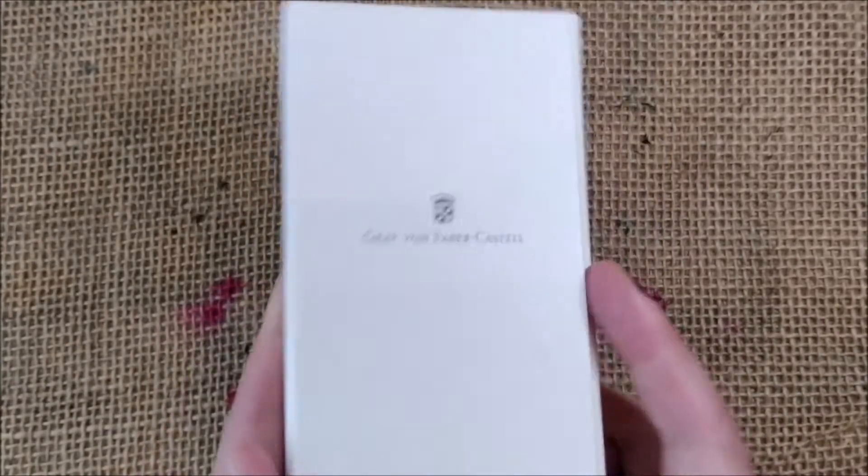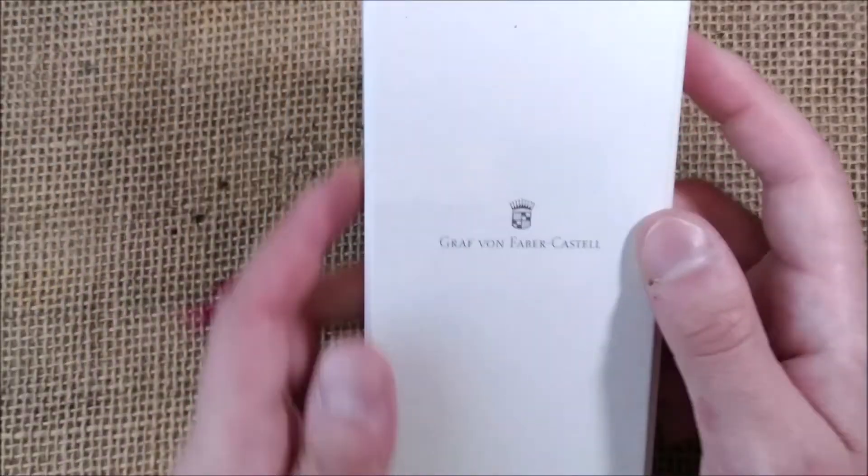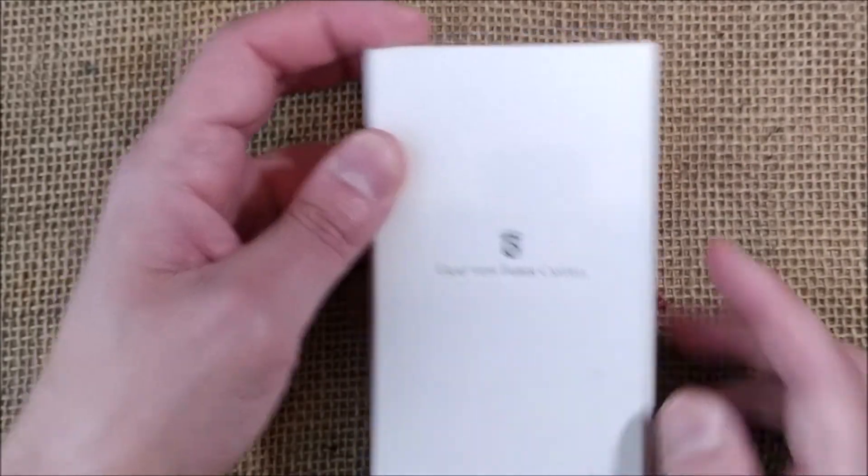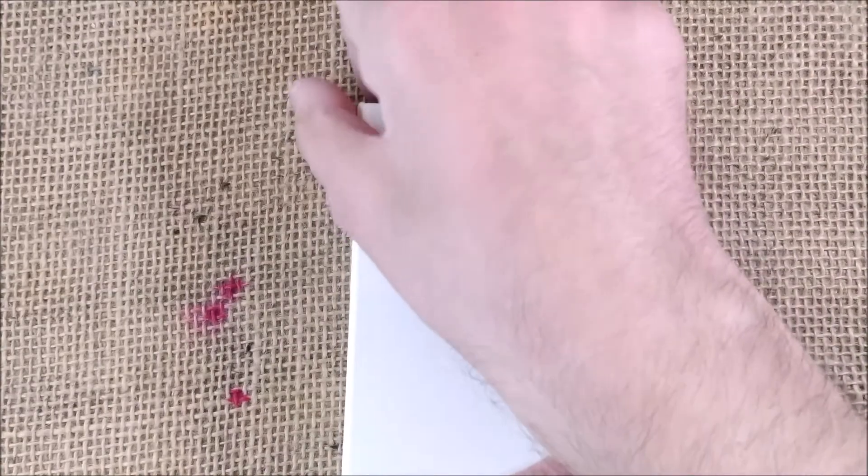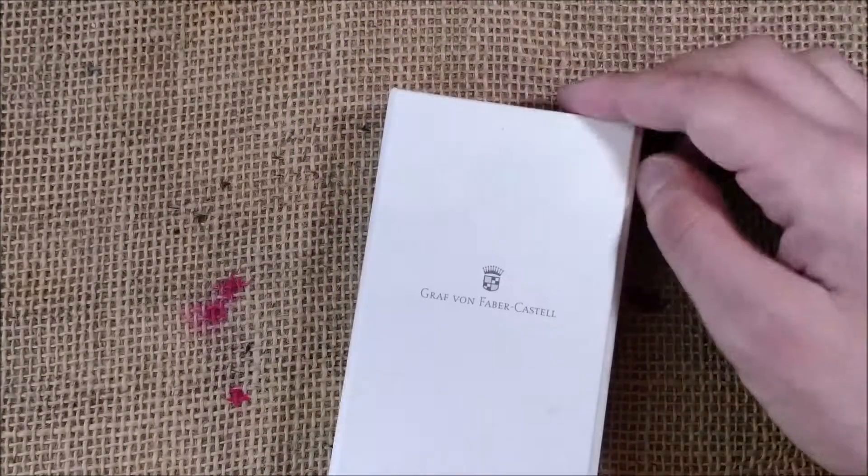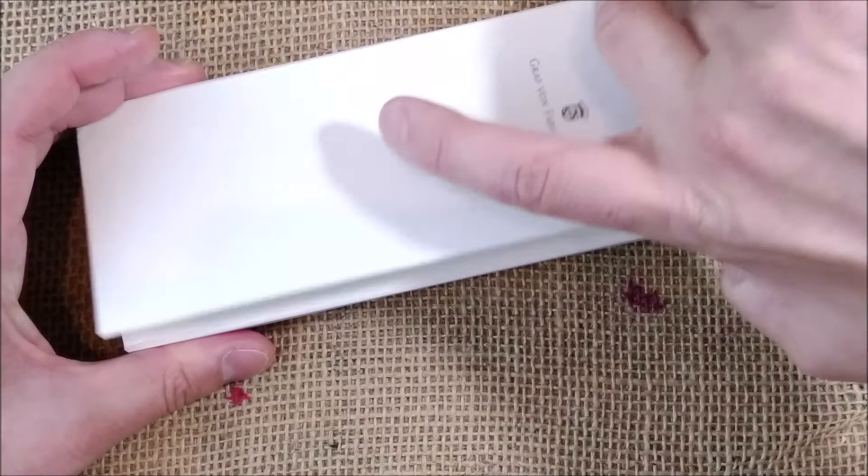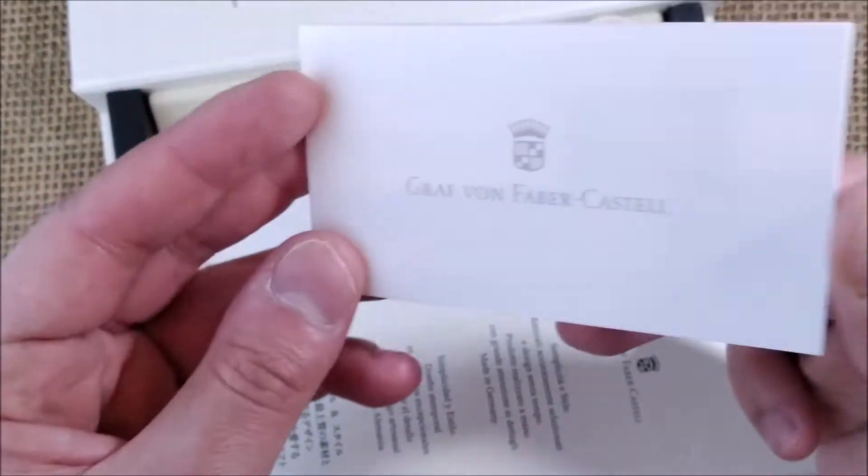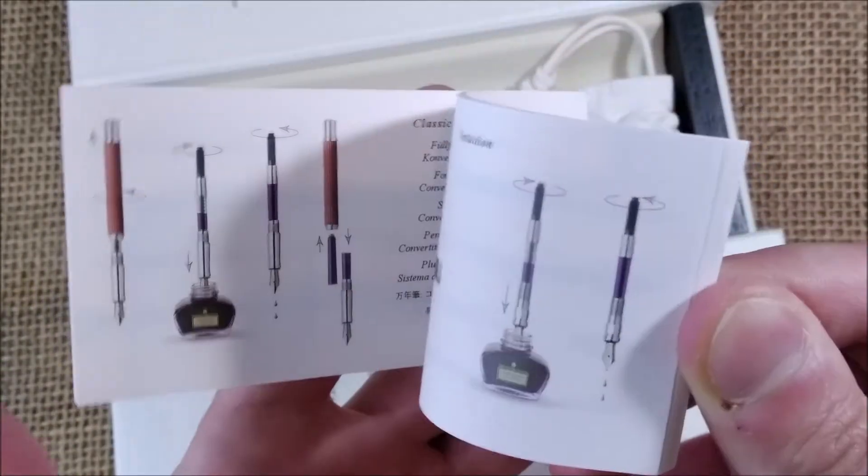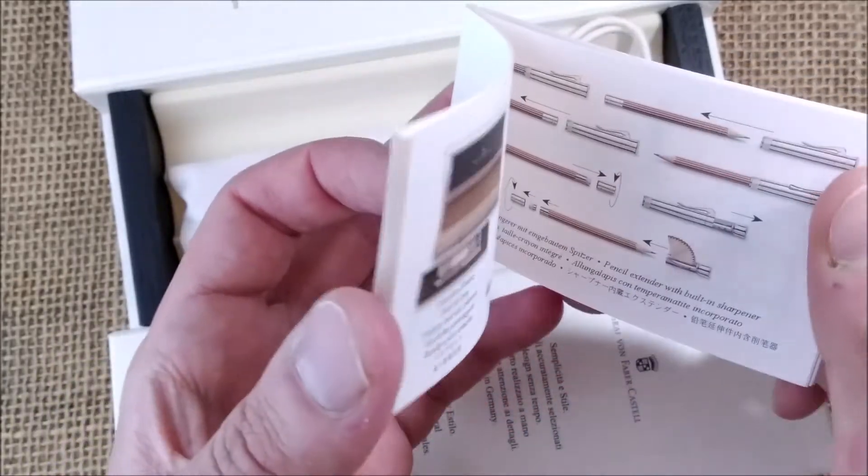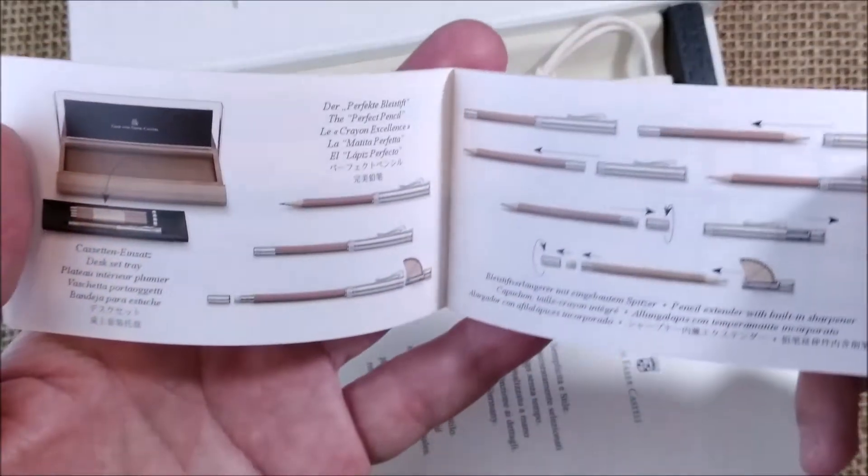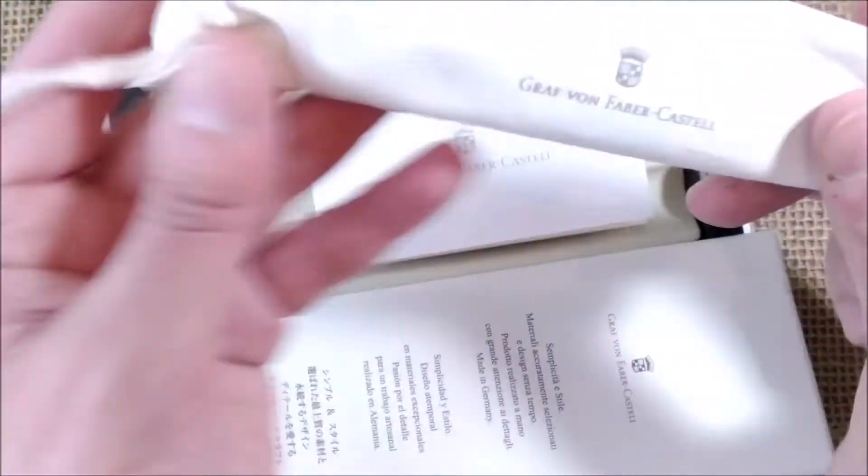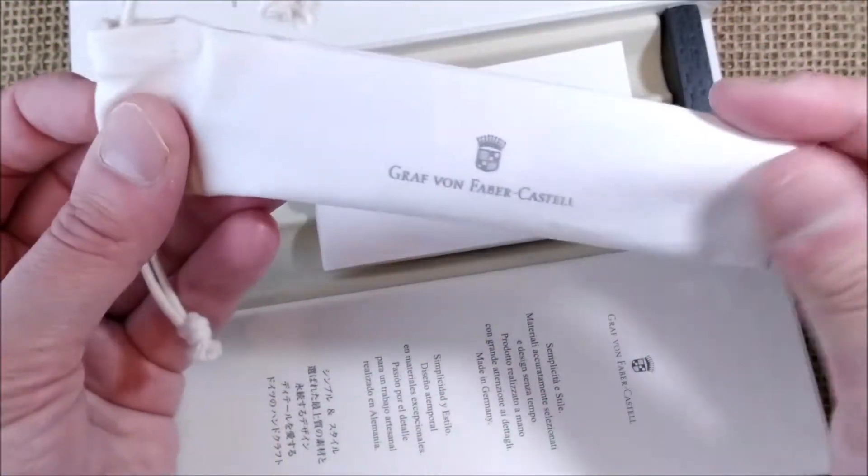You have a very strong cardboard box with some wood parts. It says here Graf von Faber-Castell and has the coat of arms of the brand or the family. It closes with a magnet so you have to lift this and then the other part. You have a little booklet with the same kind of design with information, some products and instructions on how to use it.